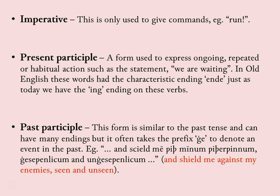Present participle — for example, 'waiting'. Currently used a lot in modern English, it gives itself away with the '-ing' ending on words. 'We are waiting' — 'waiting' is in the present participle. It's something we are currently doing, a form used to express ongoing, repeated, or habitual action, such as the statement 'we are waiting'. In Old English, these words are easily identified because they have the ending '-ende'.